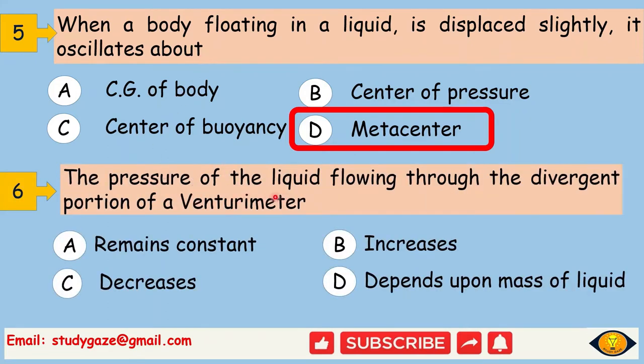The pressure of the liquid flowing through the divergent portion of a venturimeter decreases.